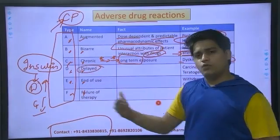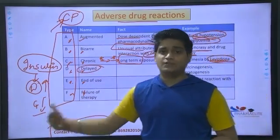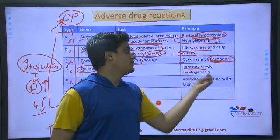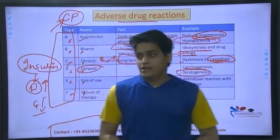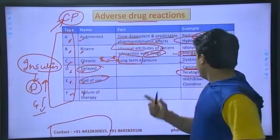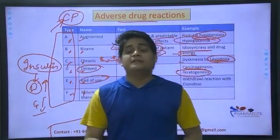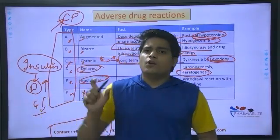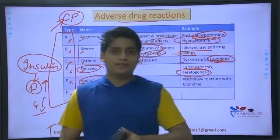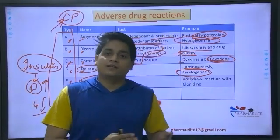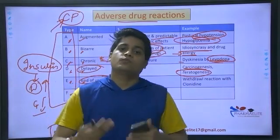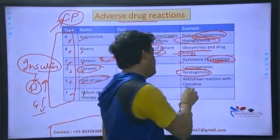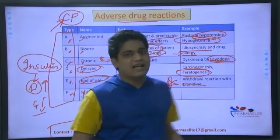Delayed ADR occurs over a period of time — it takes time to happen. In case of delayed adverse drug reaction, you can face carcinogenesis or teratogenesis. End of use is a classical side effect faced more with antidepressants and antipsychotic drugs used in schizophrenia. You cannot withdraw the drug entirely — it has to be a gradual cut down from 100 mg to 80 mg to 40 mg to 20 mg to 10 mg to 5 mg, so you don't face withdrawal side effects, as with drugs like clonidine.